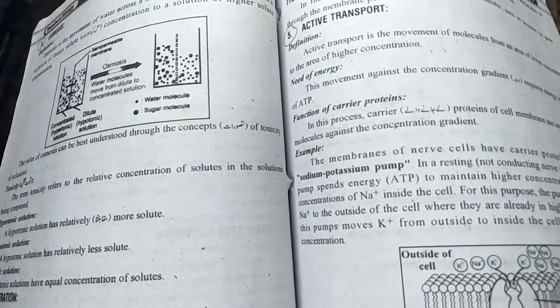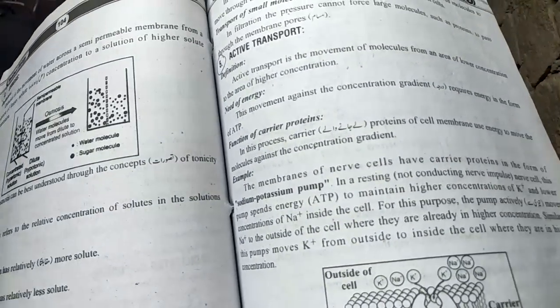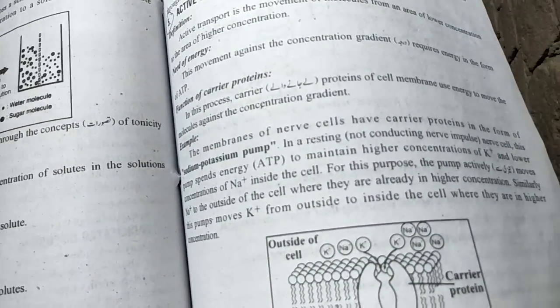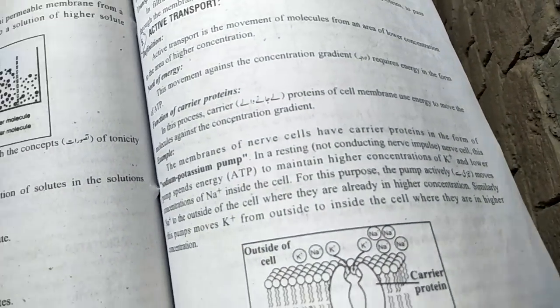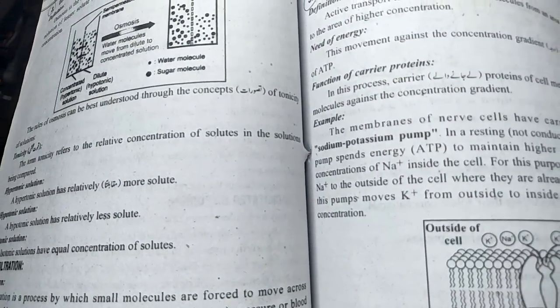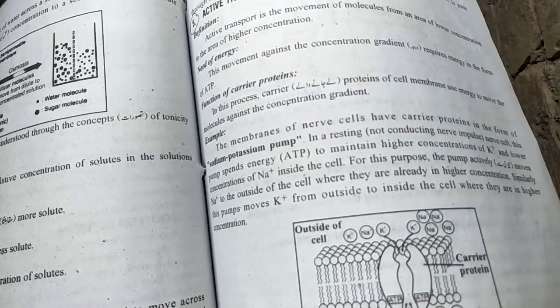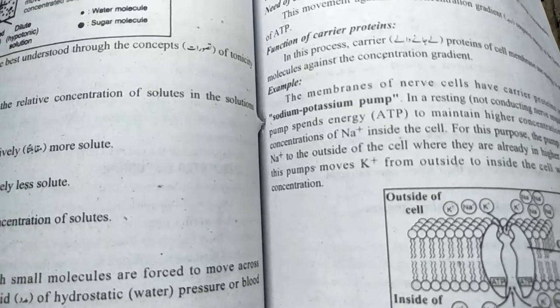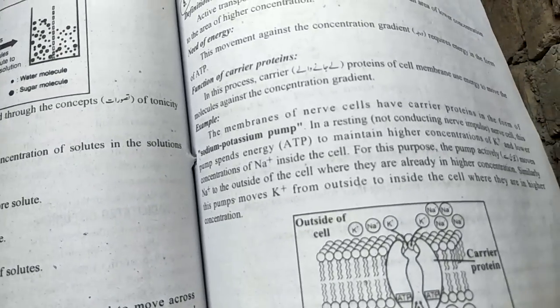The membranes of nerve cells have carrier proteins in the form of sodium-potassium pumps. In a resting (not conducting) nerve cell, this pump spends energy (ATP) to maintain higher concentrations of K+ inside the cell.